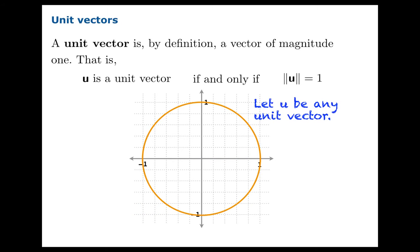This has a consequence in terms of components. Let u be any unit vector. If we let theta denote the angle between the positive x-axis and the location of u, and we're measuring counterclockwise, we know from our study of trigonometry that the coordinates of that red point are cosine theta, sine theta, and those would be the components of our vector.